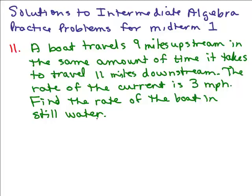Note that what you're looking for is the rate of the boat in still water. So I'm going to define my variable that way: let B equal the rate of the boat in still water.